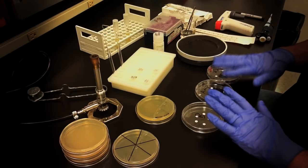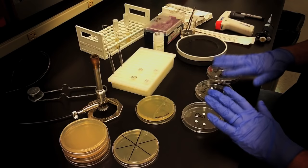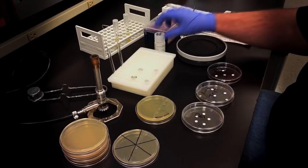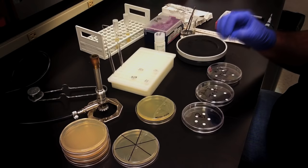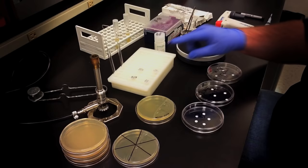While your cultures are growing out, you can make up your antibiotic test discs. For testing out an antibiotic powder, start with a fresh solution of each antibiotic being tested and then dilute them down to the desired concentration. The discs are able to hold about 20 microliters of liquid, and for the ampicillin test, we'll need a final amount of 10 micrograms on the disc. So we'll need a solution with a final concentration of 0.5 mg per mL.